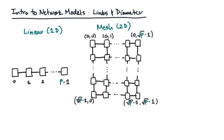A second example is a 2D mesh network. Again, it's a set of P nodes, but this time arranged in a grid. Notice how every node is connected to its north, south, east, west neighbor.